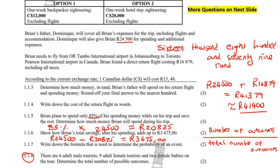There are six adult male tourists, nine adult female tourists, and two female babies on the tour. Determine the total number of possible outcomes. They want us to add these numbers together: six plus nine is fifteen, plus two is seventeen. So the total number of possible outcomes is 17.